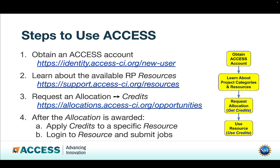How to use ACCESS — there are four steps. First, get an ACCESS account at the URL shown. Then, learn about the available resource provider resources. Next, request an allocation in one of the project categories, which provides you with credits once your allocation request is approved. Finally, once you've got credits to spend, apply them to a particular resource, then log in to that resource and submit jobs that will consume credits. Feel free to pause the video and check out those URLs.